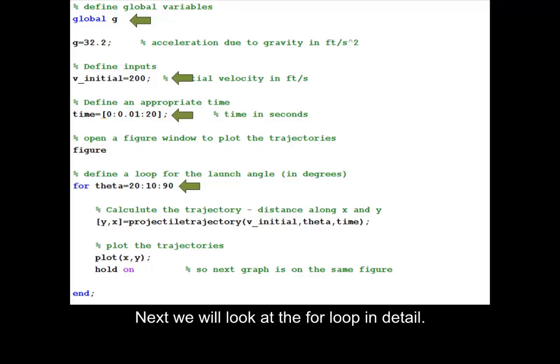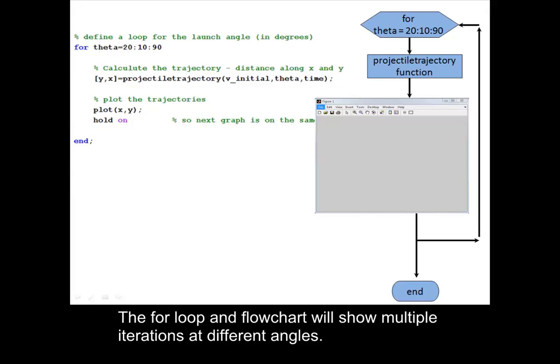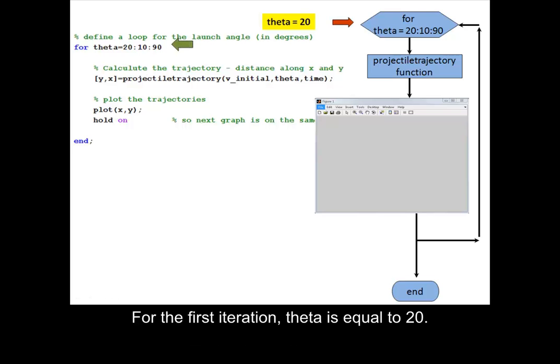Next, we will look at the for loop in detail. The for loop flowchart will show multiple iterations at different angles. For the first iteration, theta is equal to 20. Call the function projectile trajectory.